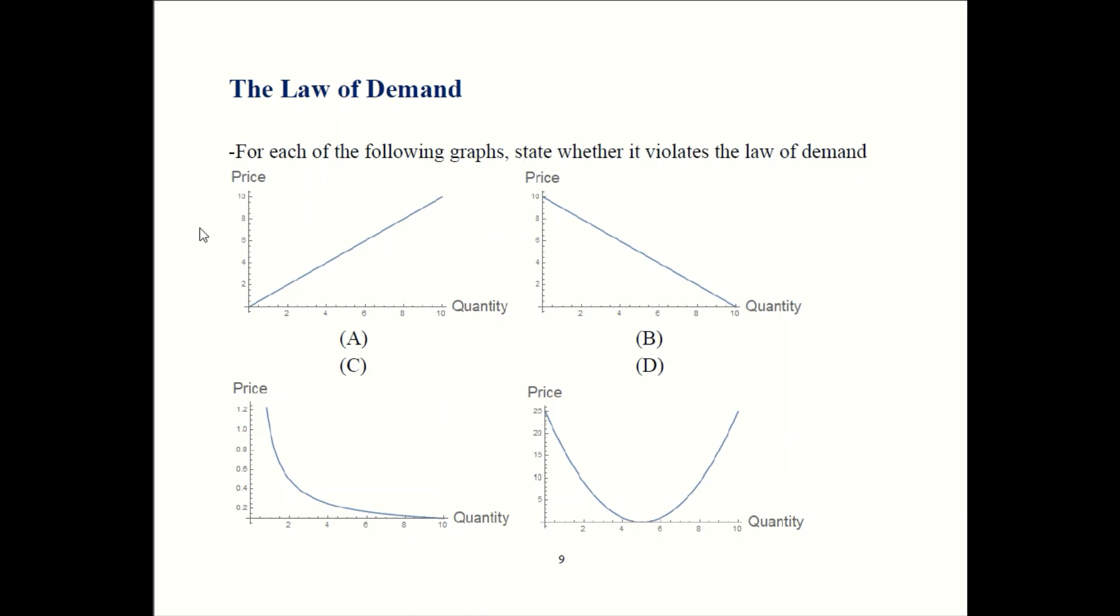I'll assume you have worked out the answers. For our first graph, graph A, whenever price goes up, quantity demanded also goes up. That can't be right. So A is violating the law of demand.